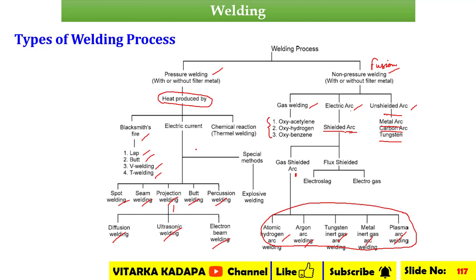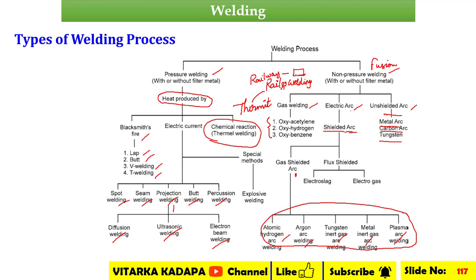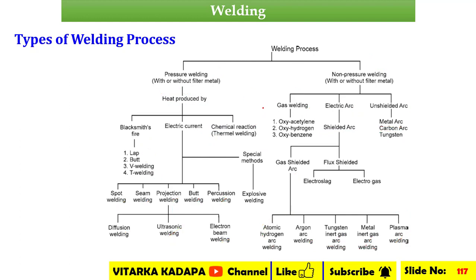Apart from these, we can also weld using a chemical reaction. This is called thermite welding or the thermite process. Thermite welding is majorly used in rail welding — on the railway, where rails run on a track, thermite welding is used to join the rails. These are the various classifications of the welding process.